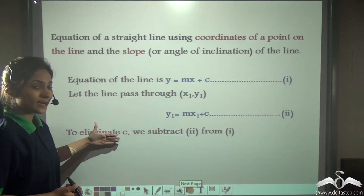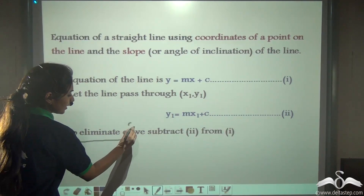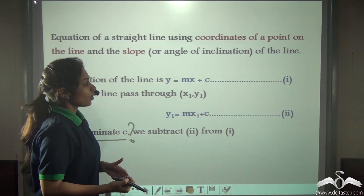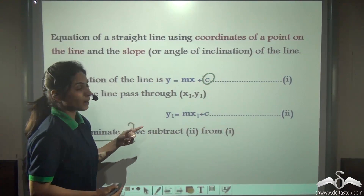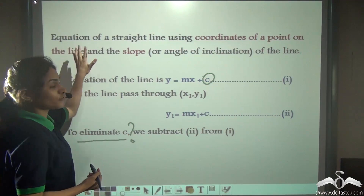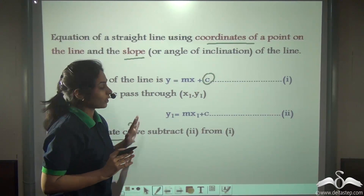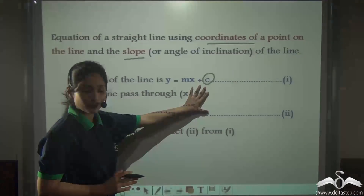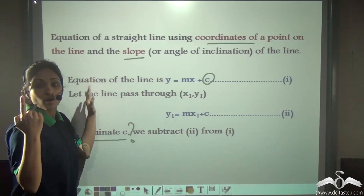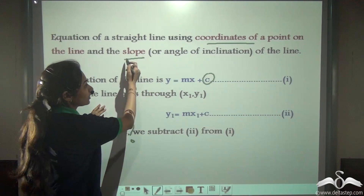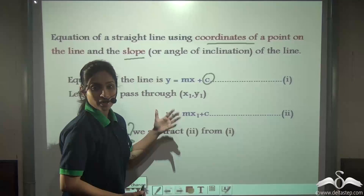Now to eliminate c, we subtract equation 2 from equation 1. Why do we need to eliminate c? In the first equation we were given the slope and the intercept, so we have the information of c. But now we have to find out the equation of a straight line using coordinates of a point on the line and the slope — we are not informed about the intercept. So we have to eliminate the intercept to get one single point on the line and the slope. So we subtract these two equations.